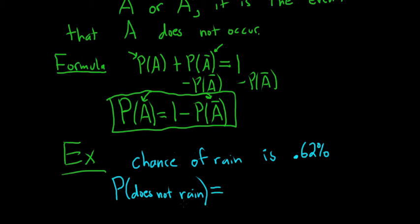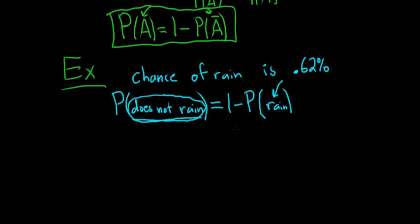So using our formula, the probability it does not rain is going to be 1 minus the probability of the complement. Well, the complement of does not rain is the opposite of does not rain. So the opposite of does not rain is rain. So whenever you have anything here, you can just replace it with 1 minus the probability of the opposite.